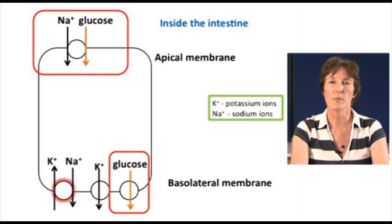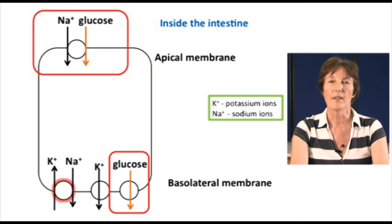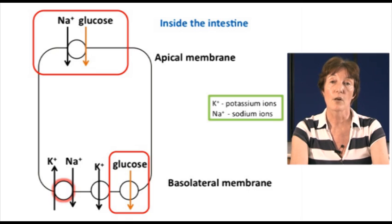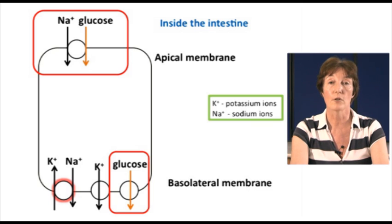It's important that we can absorb the maximum amount of glucose from our diet. If we think of how the human body has evolved, we've not always had plenty of food available, and even now many humans don't get enough food to maintain good health. So we mustn't waste any of the food that we're able to eat. Simply absorbing glucose down a concentration gradient won't ensure that all the glucose is absorbed. So how does the enterocyte cell ensure maximum absorption?